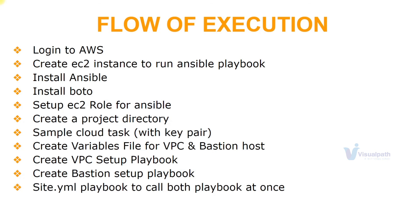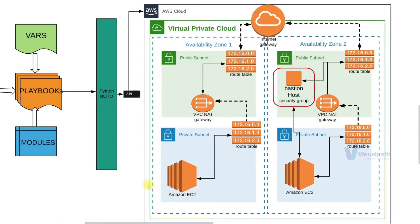We'll use a site.yml file with entries for both playbooks, so executing site.yml will in turn execute the VPC setup playbook and the bastion setup playbook. Once we're done, we'll have the entire VPC with four subnets, route tables, NAT gateway, internet gateway, and also the bastion host. So what are you waiting for — let's dive in!